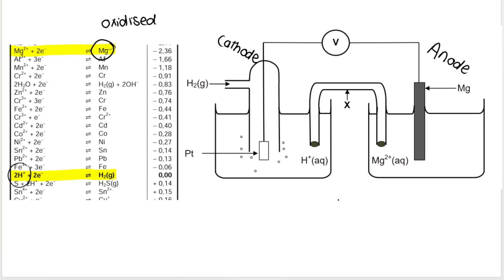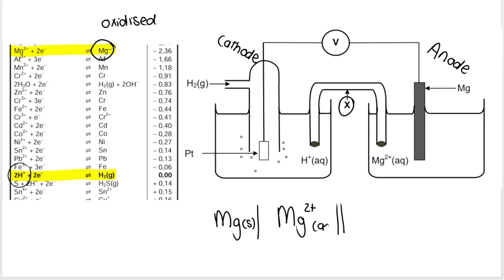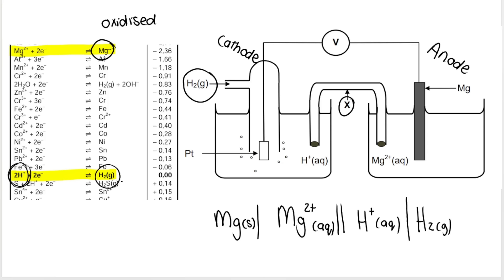For the cell notation: salt bridge in the middle. On the left, the anode — solid magnesium as my electrode, then a single line, then Mg²⁺ aqueous. On the right, the cathode — starting from the inside, H⁺ aqueous, then a single line for the phase change, then hydrogen gas being pumped in, then another single line, and on the outside a platinum inert solid electrode where the reduction reaction happens. Always double check that on the outsides of your cell notation you have a solid.